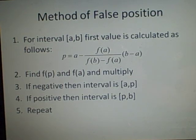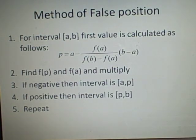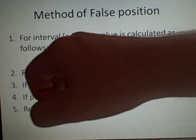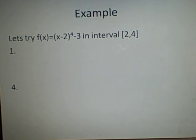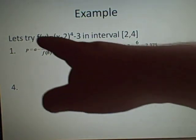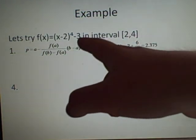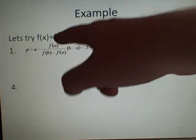Our next method is the Method of False Position. We use an equation to find our p value, and once we've found p, we do exactly the same as in bisection — multiplying f(p) and f(a), and going to the first half if negative, or the second half if positive. Again, f(a) and f(b) must have different signs so we know there's a root. For our example in interval [2, 4], a is 2 and b is 4, so we have a minus f(a) which is minus 3, over f(b) which is 13.